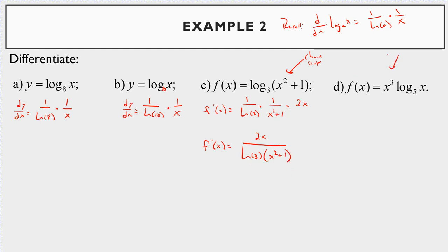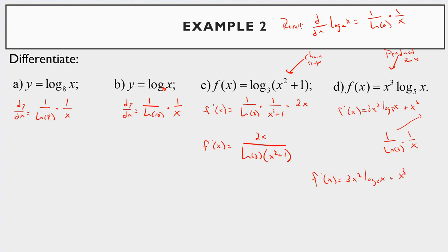For f(x) = x³·log_5(x), you need the product rule. f′(x) = 3x²·log_5(x) + x³·(1/ln(5))·(1/x). Simplifying: the x³ times 1/x gives x², so you're left with 3x²·log_5(x) + x²/ln(5).